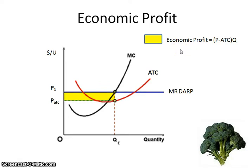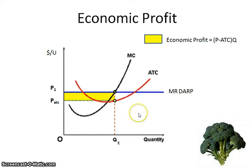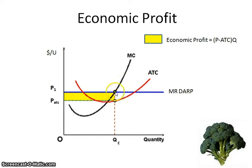In order to see if a firm has economic profit or economic loss, you need to start with our profit-maximizing output. You go where MR equals MC and draw a line straight down, and that gives you the equilibrium quantity. Then you look to see where that quantity hits the ATC curve. In this instance, our price is greater than ATC, and when price is greater than ATC, that means there's an economic profit. Per unit, it would be the distance between these two dots.